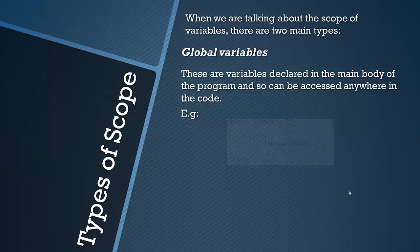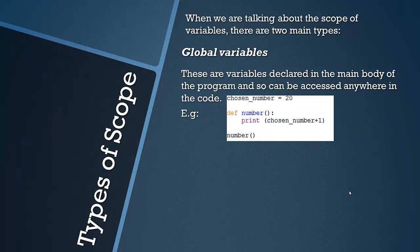So for example, in Python, if we define a variable chosen_number equals 20, this is a global variable because it's in the main body of the text. It's not indented. This is obviously relevant to Python. This is in Python so it may be different in other languages. But this is just an example.